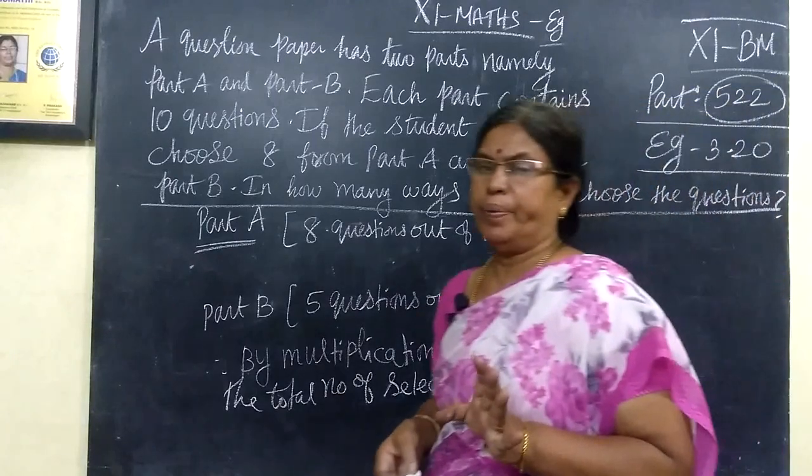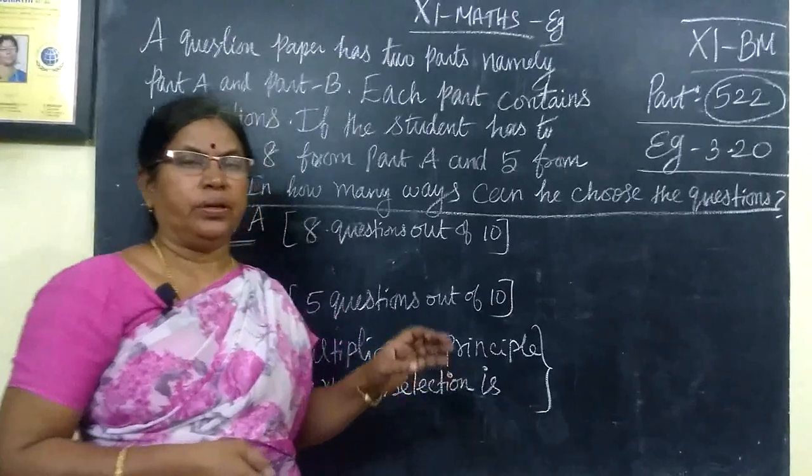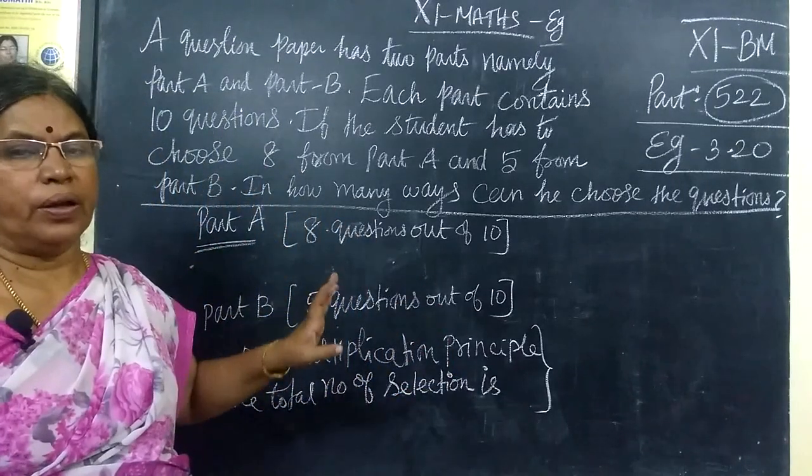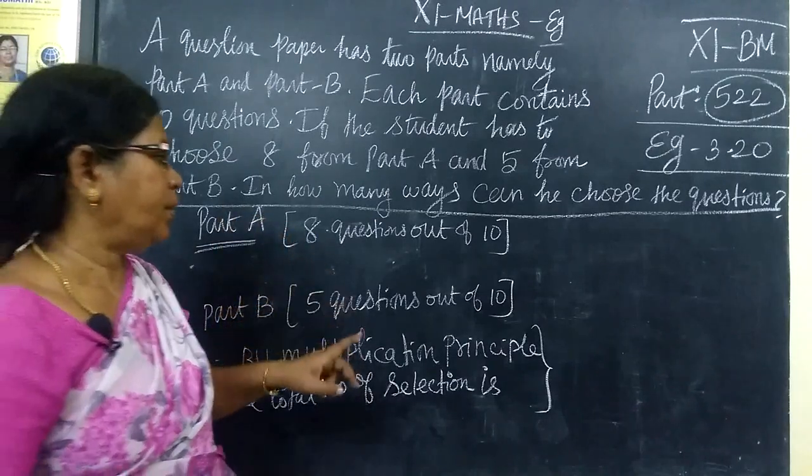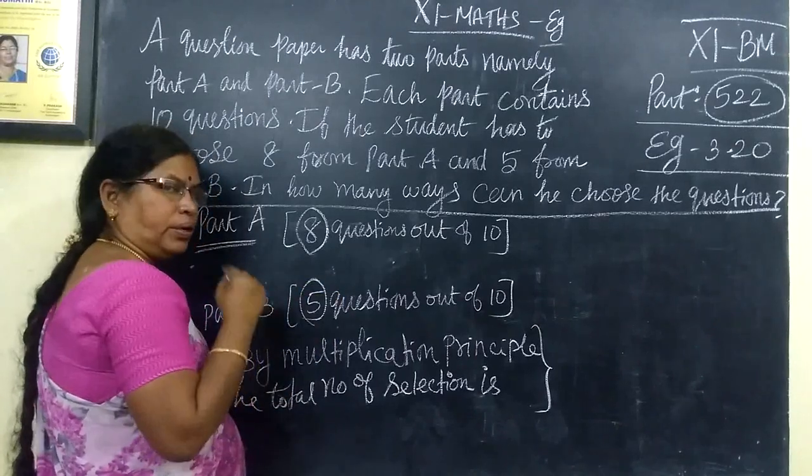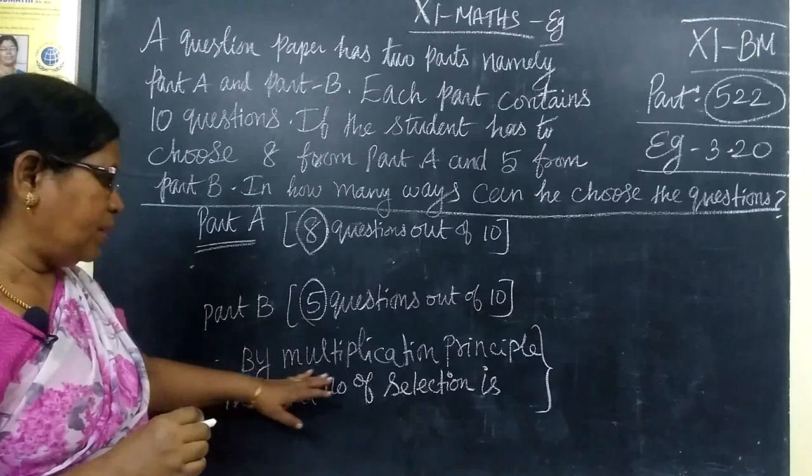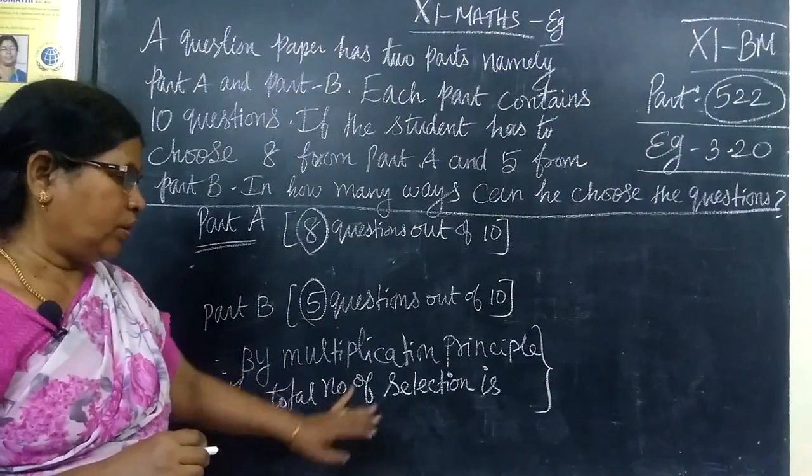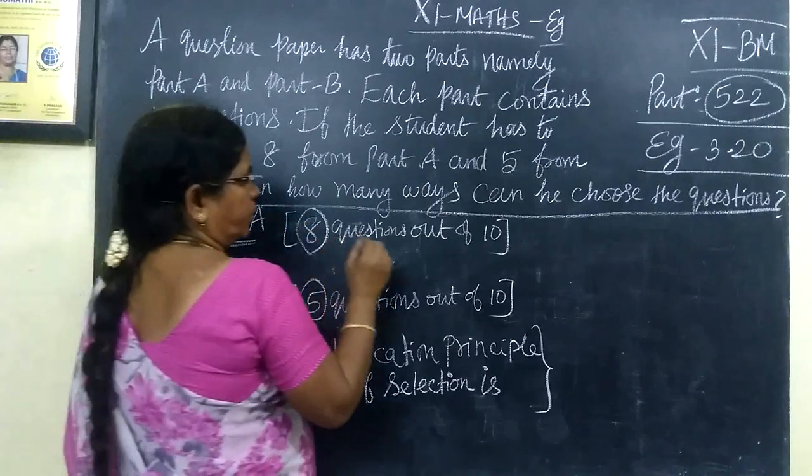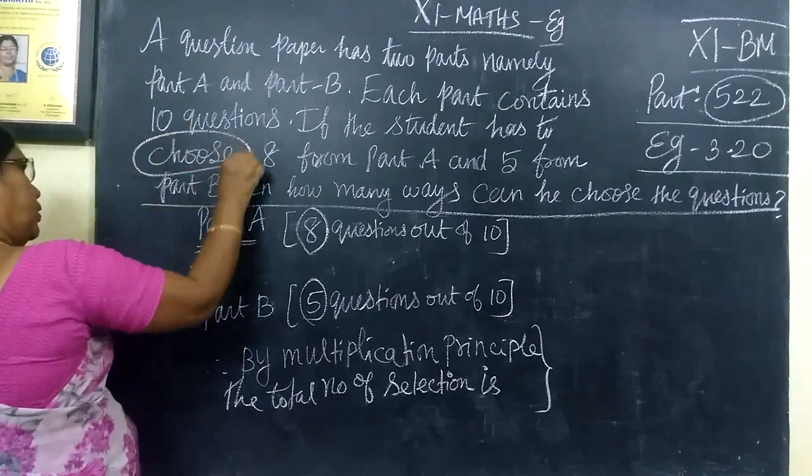Part A has 10 questions and Part B has 10 questions. A student has to choose 8 questions from Part A and 5 questions from Part B. He has to choose to write the exam. By multiplication principle and combination, we solve this.